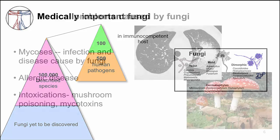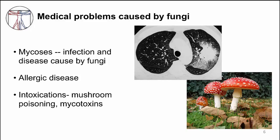Fungi can cause many medical problems in humans. In this course, we will be focusing on fungi that cause infection — these are called mycoses. The CT scan of the lung on the slide shows a fungal infection of the lung, a pneumonia due to Aspergillus. Fungi can cause other medical problems besides infections. Their spores are responsible for some allergic diseases. A few fungi also produce chemicals that can be toxic to humans if ingested — these are called mycotoxins. Mushroom poisoning is one example. The picture on the slide shows a poisonous mushroom that has psychoactive agents and can induce hallucinations if ingested.